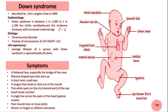This extra genetic material affects the development of the body and brain, leading to the characteristic features of Down syndrome. Global prevalence is approximately 1 in 700 to 1000 live births. Symptoms include a flattened face, almond-shaped eyes, upward-slanting eyes, short stature, short neck, hypotonia, small ears and mouth, a single palmar crease, intellectual disability, delayed development, and more.